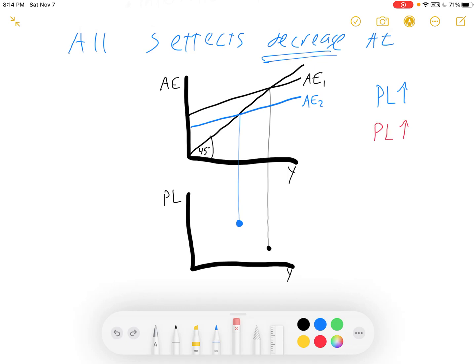Let's increase price level again just to get a better curve. Increase the price level. There's a decrease in aggregate expenditures. There's a decrease in the equilibrium GDP. You get that point. Combine a whole bunch of points like that, and you start to get a curve that looks like this.